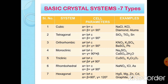Sixth, rhombohedral crystal system: cell parameters are a = b = c, and α = β = γ but ≠ 90°. Examples: NaNO₃, ICl, As, etc. Seventh, hexagonal crystal system: cell parameters are a = b ≠ c, α = β = 90°, and γ = 120°. Examples: HgS, Mg, Zn, Cd, graphite, ice, etc.